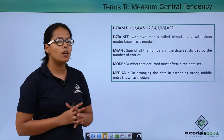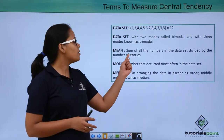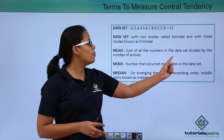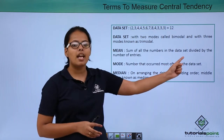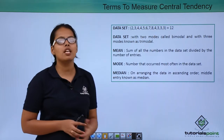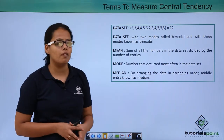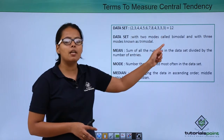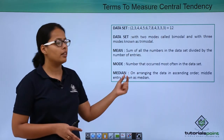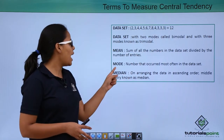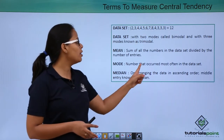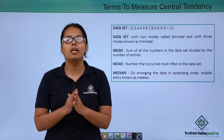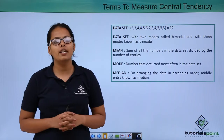How to calculate mean? Take the sum of all the numbers in the dataset and divide by the number of entries, which is 12. When you sum all these values and divide by 12 you'll get the mean. How to calculate the mode? The number that occurred most often in the dataset will become the mode of that dataset.